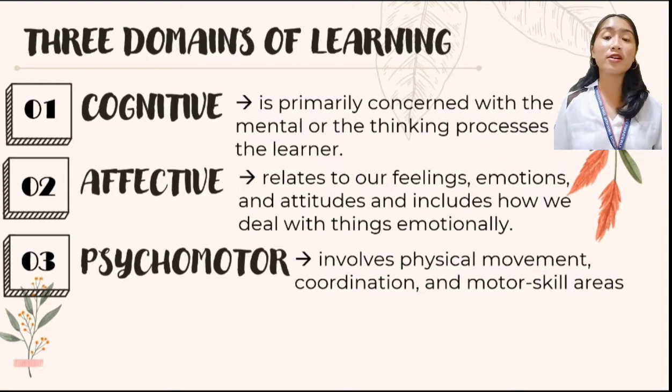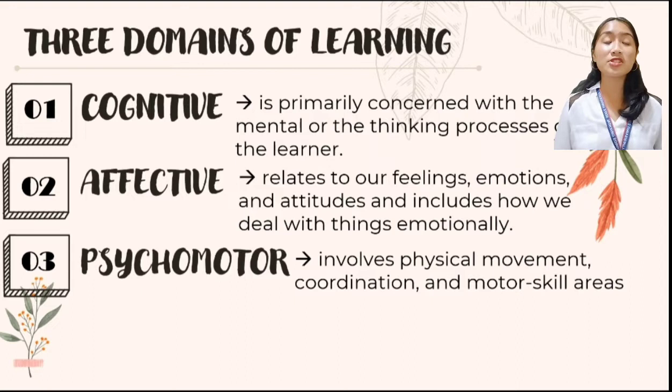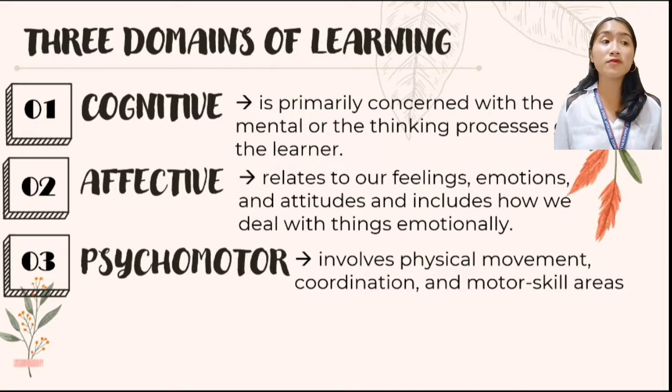As stated in Bloom's Taxonomy, there are three domains of learning, and these are the cognitive, affective, and psychomotor domain. Cognitive is primarily concerned with the mental or thinking processes of the learner, whereas the affective relates to feelings, emotions, and attitudes, and how we deal with things emotionally. The psychomotor involves physical movement, coordination, and motor skill areas.